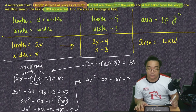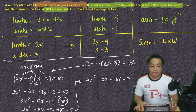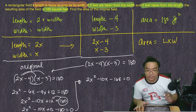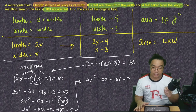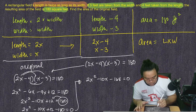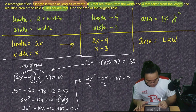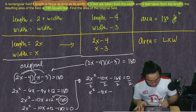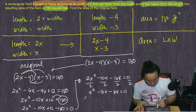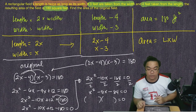We can solve this using factoring, the quadratic formula, or completing the square. One tip: if you can simplify first, do it. We notice that 2, negative 10, and negative 168 are all divisible by 2, so dividing all terms by 2 gives us the simpler equation: x² − 5x − 84 = 0. This is what we need to factor.